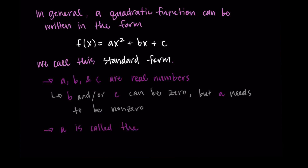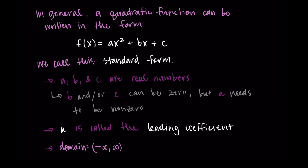The value a has a special name — it's called the leading coefficient. In general, the domain of any quadratic function is all real numbers, negative infinity to positive infinity. We can give a quadratic function any input and it will always provide a corresponding output. The range is not so easily defined — it depends on the leading coefficient a and the vertex value, as we'll see when exploring examples.